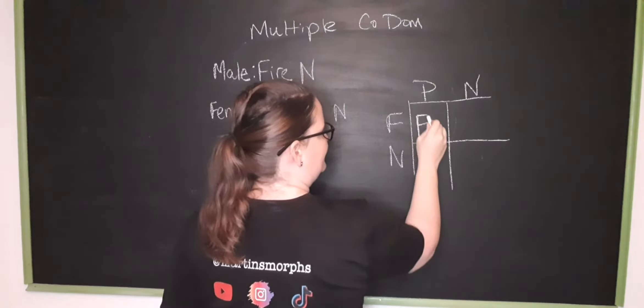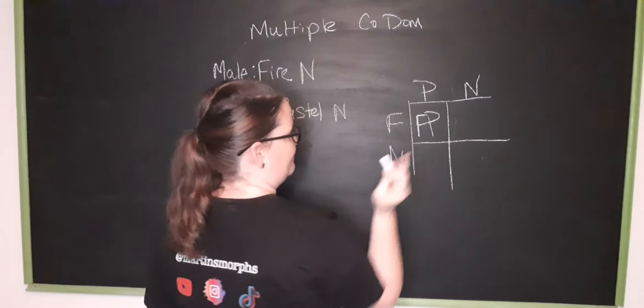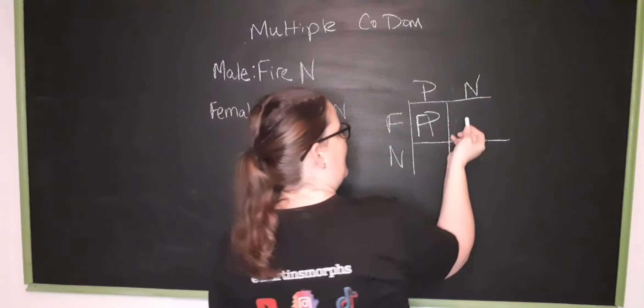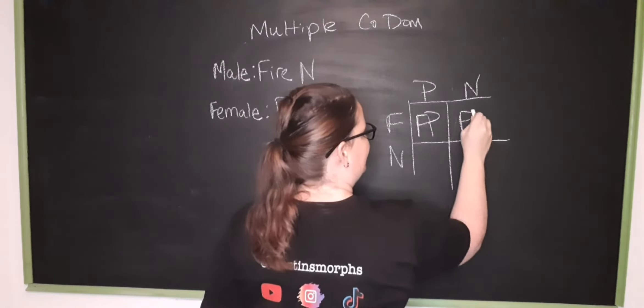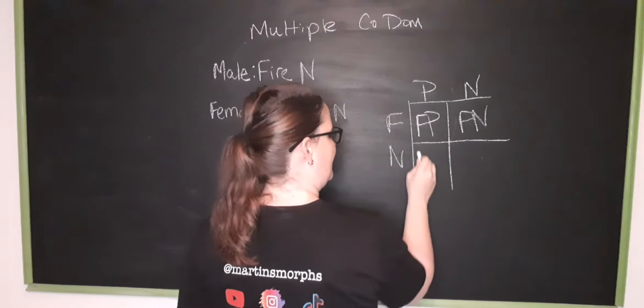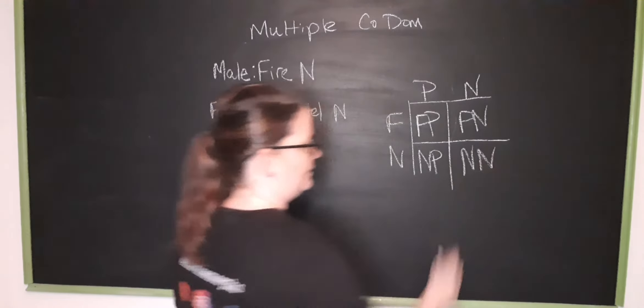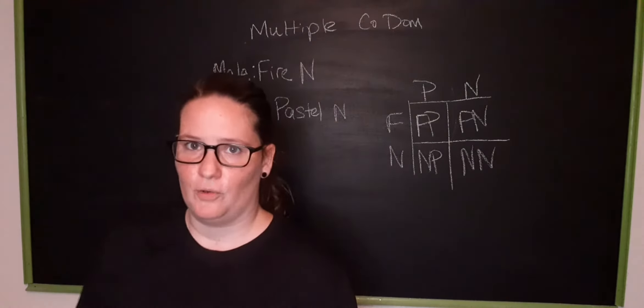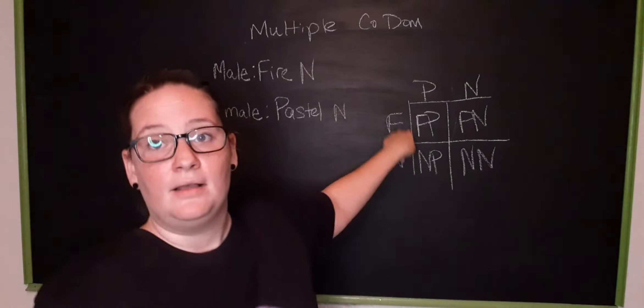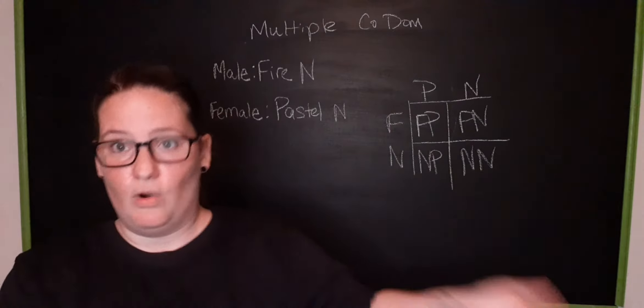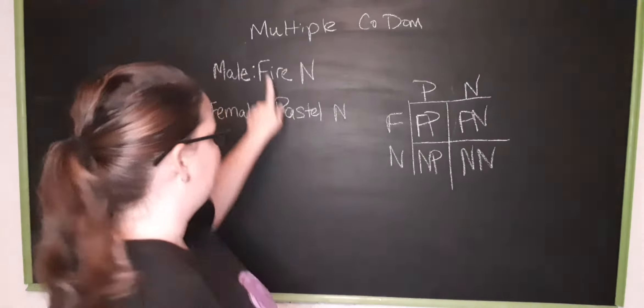So right off the bat you get a firefly and then there's going to be a fire and a pastel and then a normal. So one out of four is going to be a normal and the same goes for the ultimate one that you are trying to produce from this pairing.